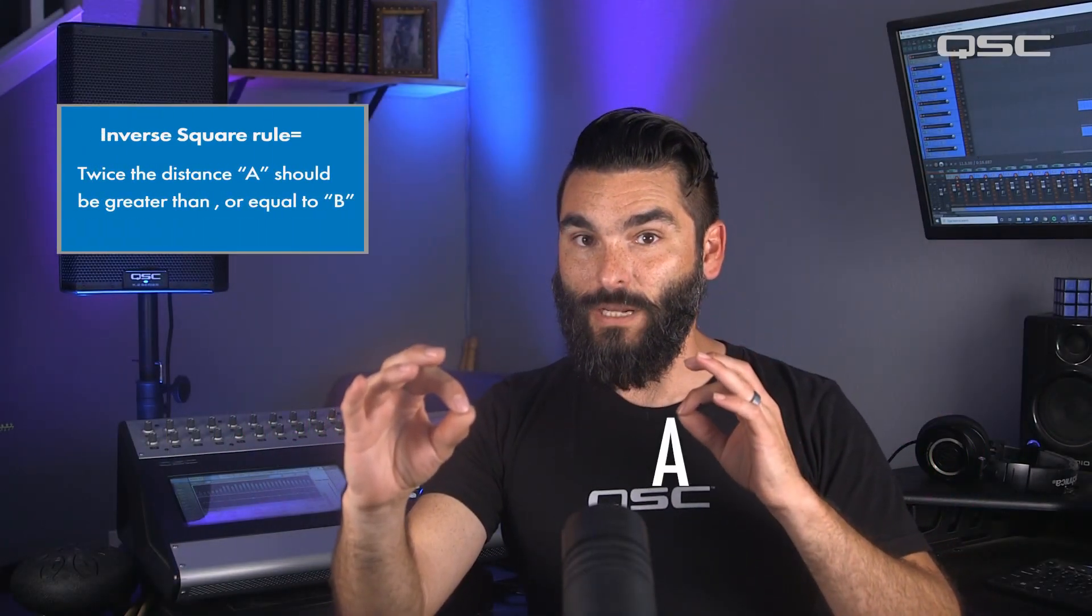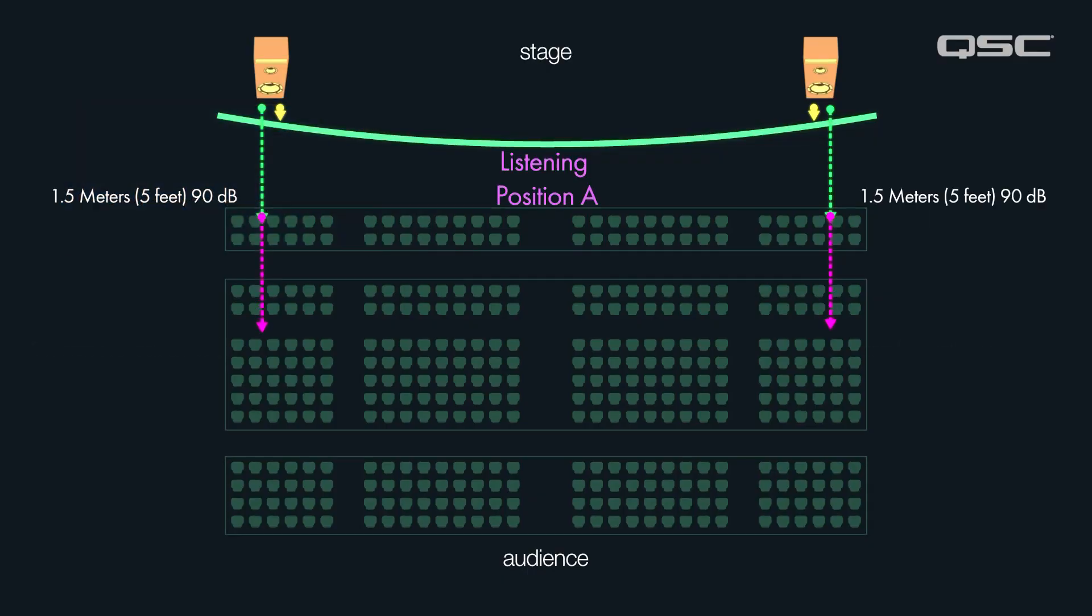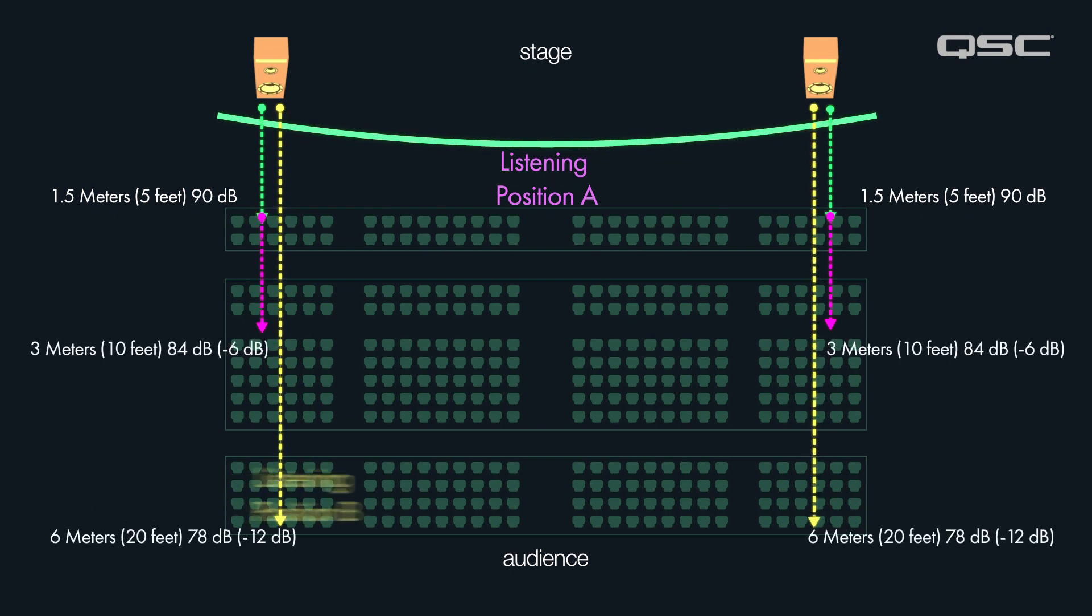The rule to follow is that twice the distance A should always be greater than or equal to B. So in any location in which the sound level begins to dip below 6dB, we can add a loudspeaker here so that the negative 6dB difference is not exceeded.